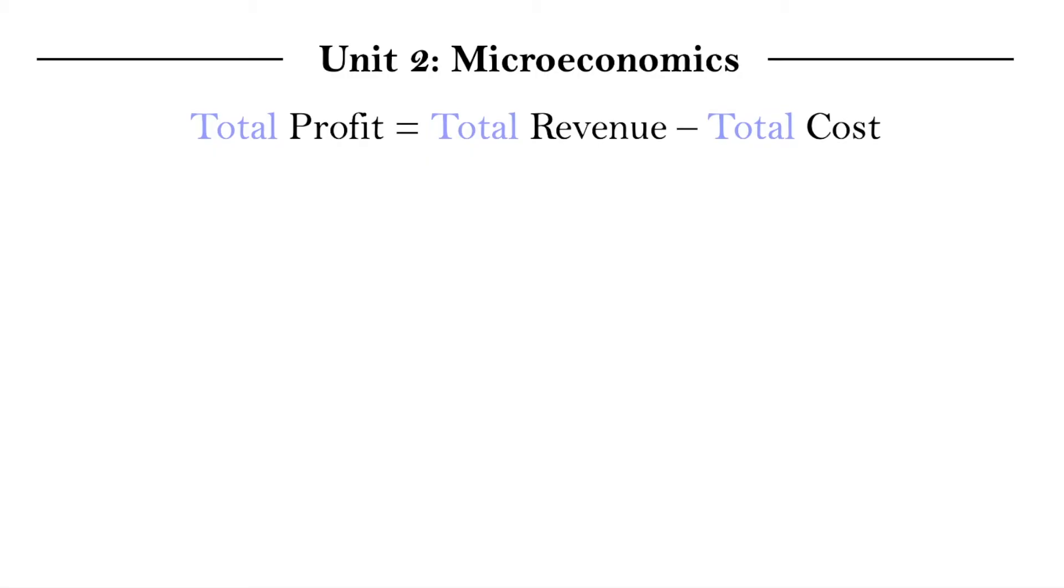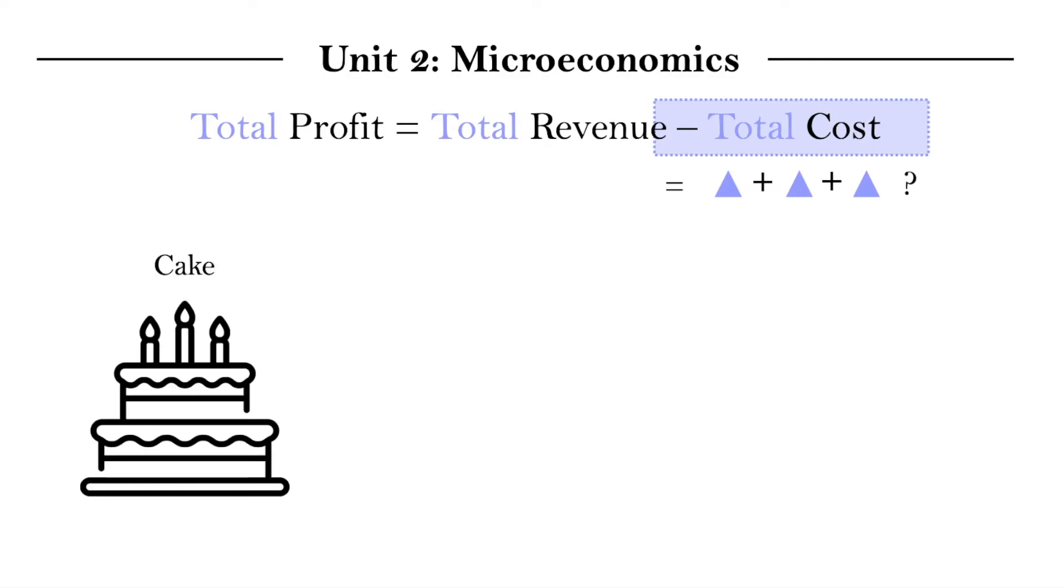So with our clarified formula here, let's first take a look at total cost and what it is made up of. When we're producing a particular good, let's say cake, there are different costs that go into making a cake. And now I want us to think of these different costs with this one standard in mind. Does the cost change as we change the quantity of cake? Yes or no?